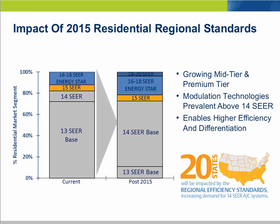If we dive a little bit deeper into the efficiency standards, I'd like to talk first about residential standards. The United States was carved out into three zones with increased efficiency standards. Prior to this, 13 SEER was the requirement across all 50 states. With these new standards, states in both the south and southwest move up to 14 SEER as a new minimum requirement. Modulation may not be required to deliver 14 SEER, but if you look at the graph on the left, there's generally a tiering strategy — a good, better, best strategy — and achieving mid-tier or premium tier systems will certainly benefit from modulation technologies.